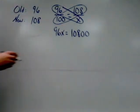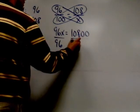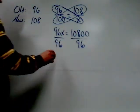Now I have to divide both sides by 96 to get x. And when I do this division, the result I obtain is 112.5.